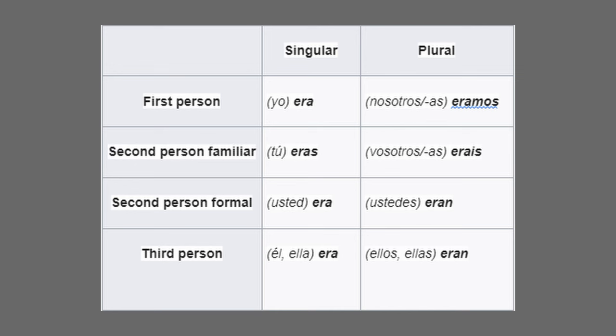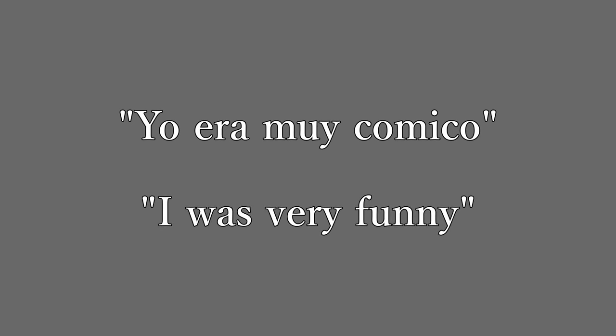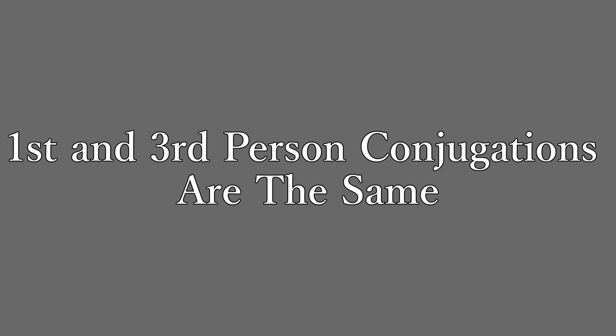Using the verb ser in the imperfect: yo era (I was), tú eras (you were), usted era (you were formally), él/ella era (he/she was), nosotros éramos (we were), vosotros erais (you all were), ustedes eran (you all were), ellos/ellas eran (they were). An example: yo era muy cómico — I was very funny. Note that in each example, the first and third person conjugations are the same — this can be seen with virtually all verbs in this tense.